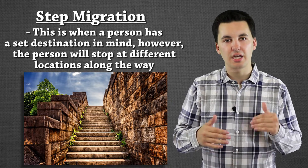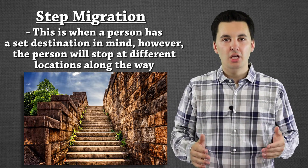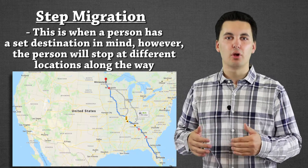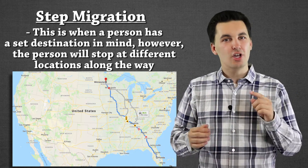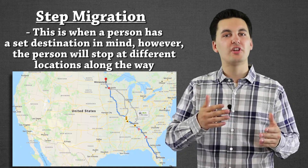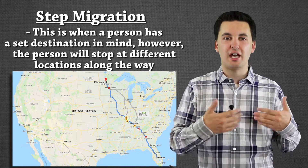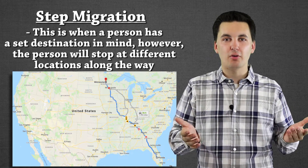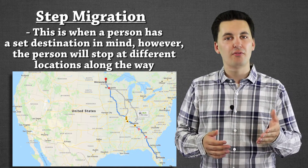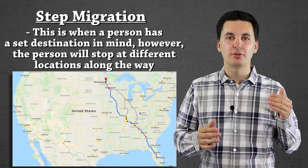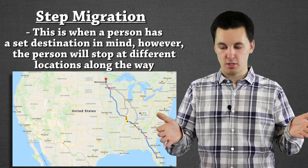Step migration is when people have an end goal in mind; however, there are different areas in between and they might stay at those for an extended period of time. For example, if I'm migrating from Florida to Minnesota, you might stop and stay with some family in Iowa for a couple of months. Iowa was part of the step to get to Minnesota — eventually you make it, but there are areas in between where you might stay for varying lengths of time.